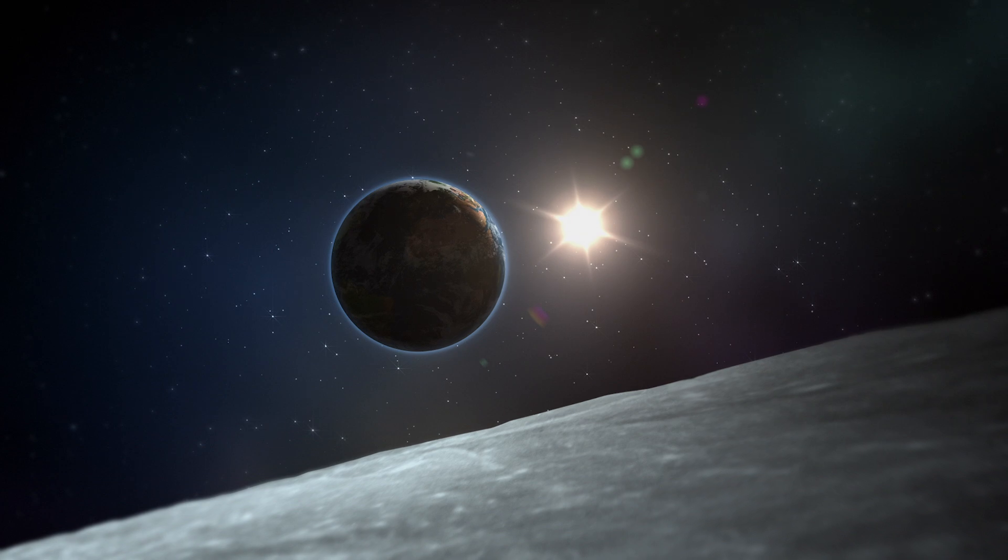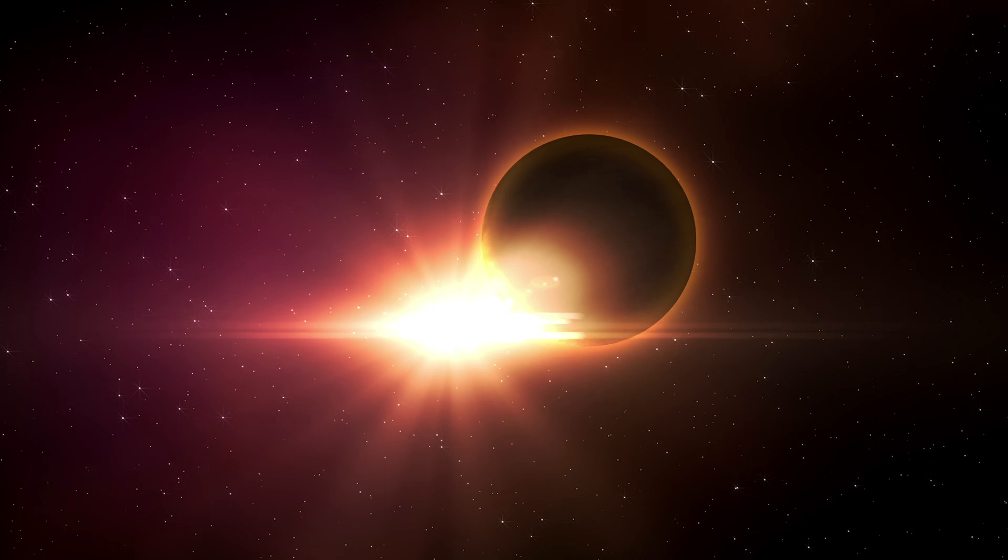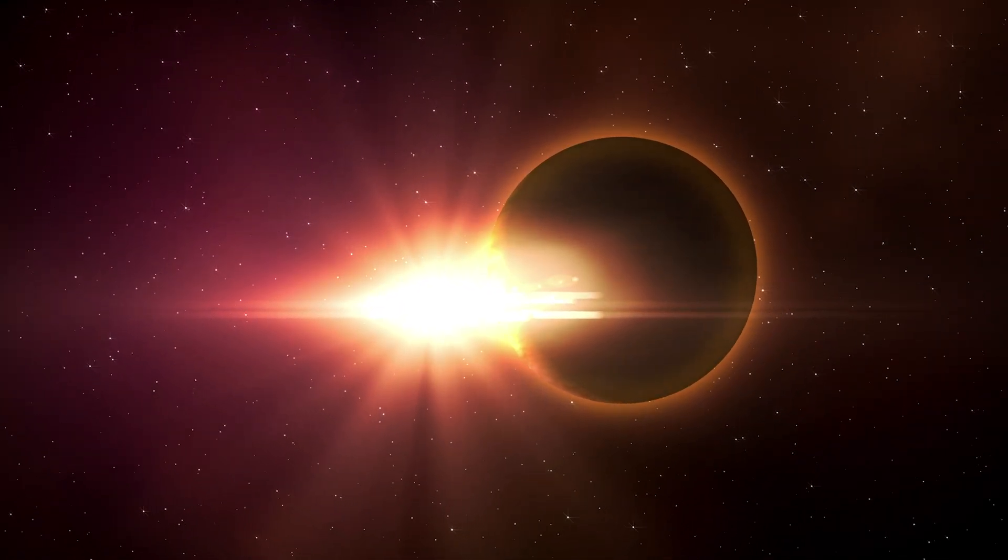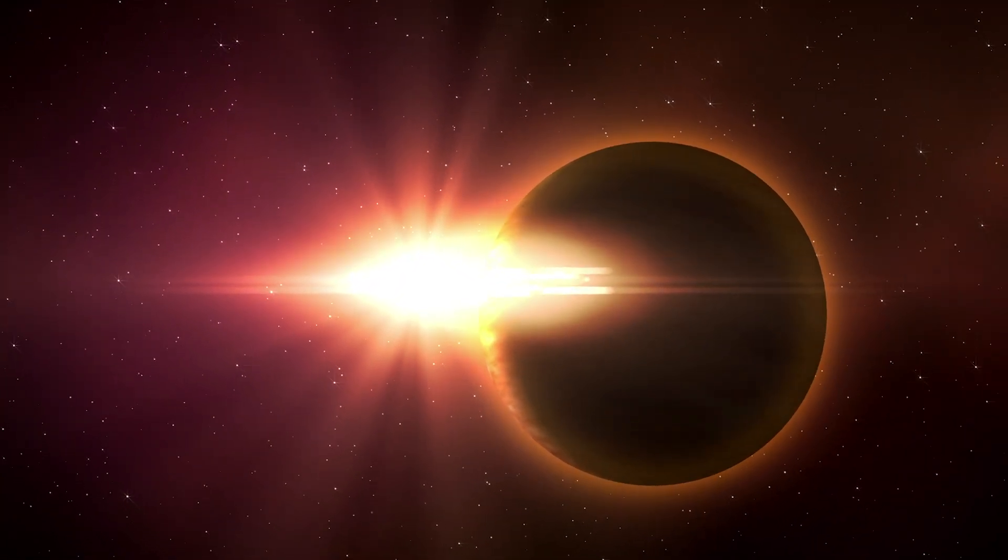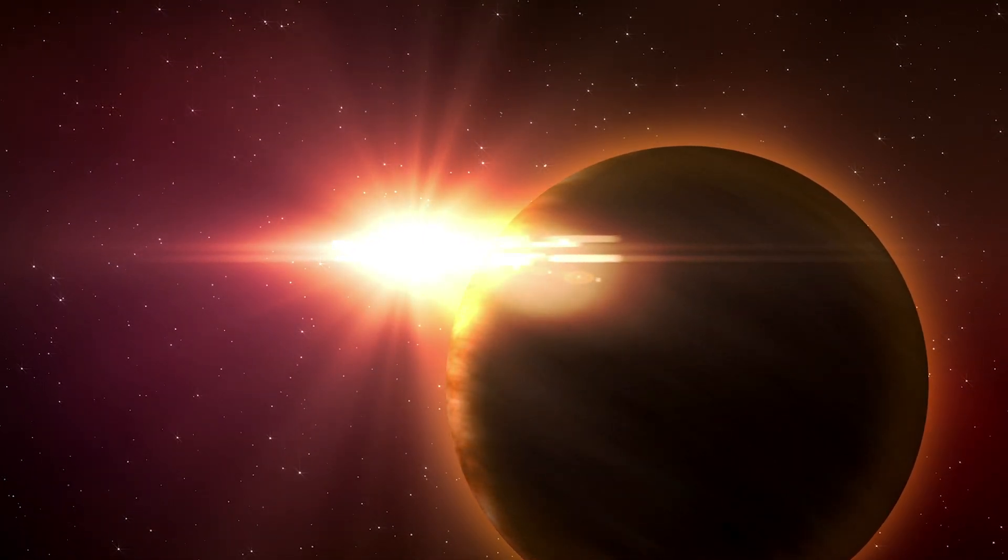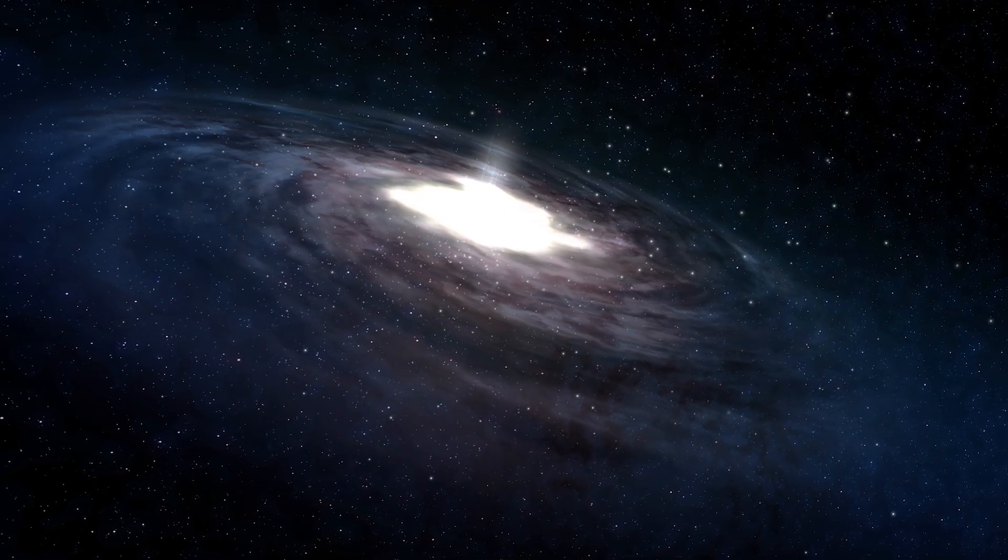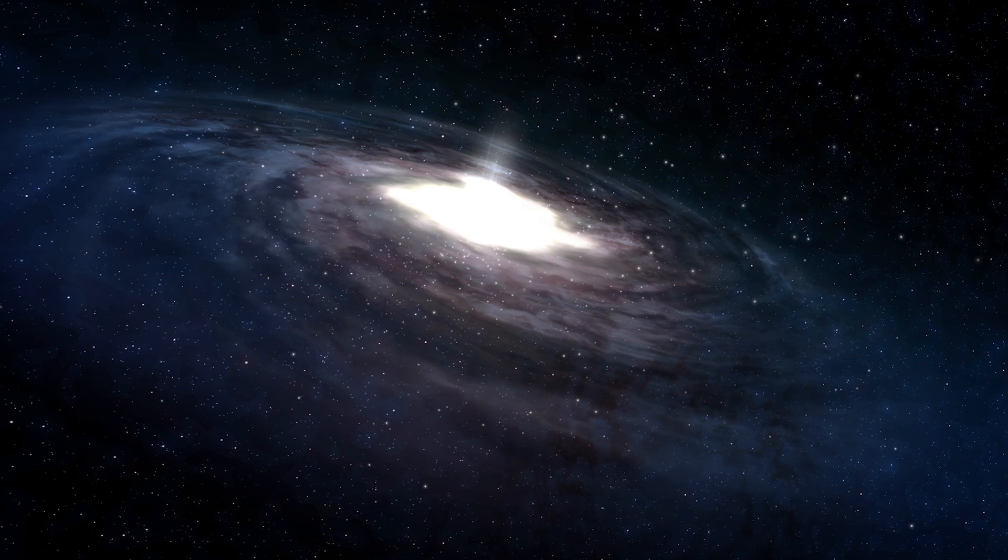On the other hand, solar orbiter, which flies in space, sees our star much better. According to scientists from ESA, in the near future, the spacecraft will be able to take the closest images of the Sun, and for the first time in history, it will also take images of the polar regions of the star.